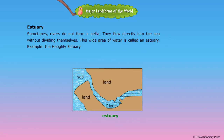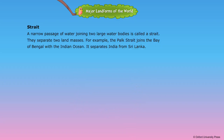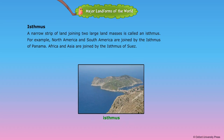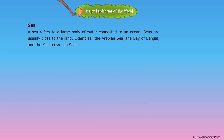Estuary. Sometimes rivers do not form a delta. They flow directly into the sea without dividing themselves. This wide area of water is called an estuary. Example: the Hooghly Estuary. Strait. A narrow passage of water joining two large water bodies is called a strait. They separate two landmasses. For example, the Palk Strait joins the Bay of Bengal with the Indian Ocean and separates India from Sri Lanka. Isthmus. A narrow strip of land joining two large landmasses is called an isthmus. For example, North America and South America are joined by the Isthmus of Panama, and Africa and Asia are joined by the Isthmus of Suez. Sea. A sea refers to a large body of water connected to an ocean. Seas are usually close to the land. Examples: the Arabian Sea, the Bay of Bengal, and the Mediterranean Sea.